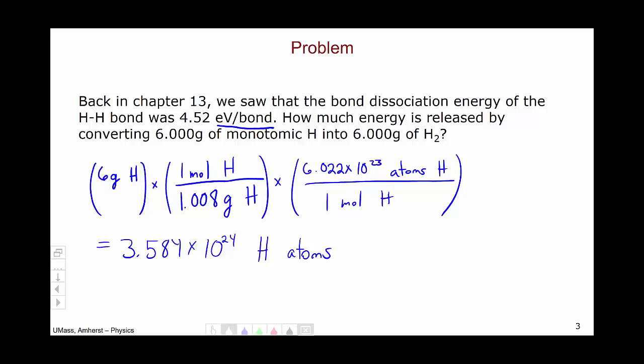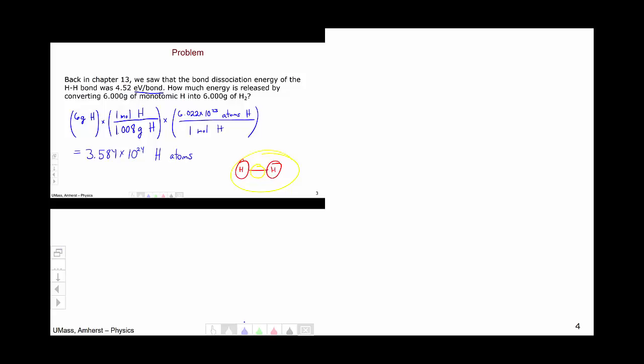But this is not the number of bonds we're going to get, because we're thinking about diatomic hydrogen, which is two hydrogen atoms bonded together. We can see that the number of bonds is half the number of atoms. We get one bond for every two atoms. Therefore, we are going to have 3.584 times 10 to the 24th over 2, or 1.79 times 10 to the 24th hydrogen-hydrogen bonds formed.